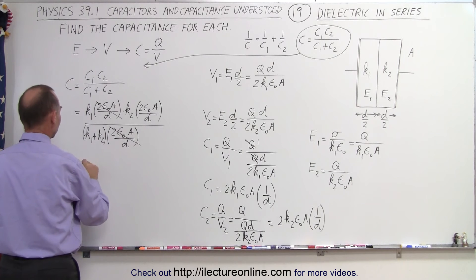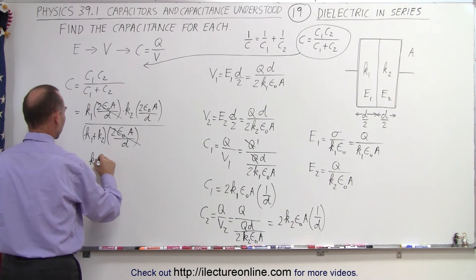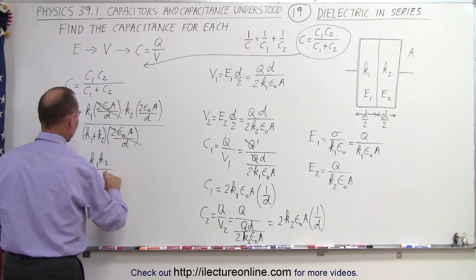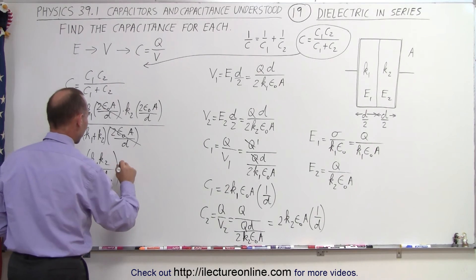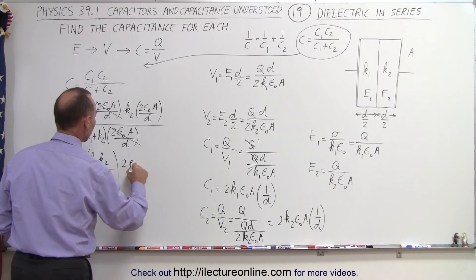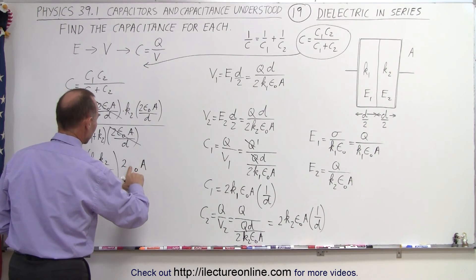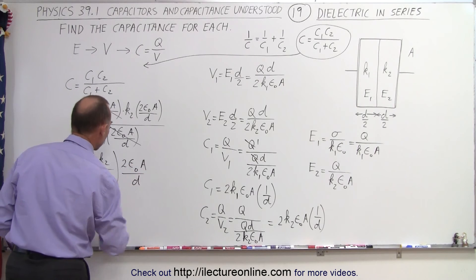And now what I end up with is this is equal to k1 times k2 over k1 plus k2 multiplied times 2 epsilon naught A—and of course that's the wrong E there, how about epsilon naught like this—divided by d.